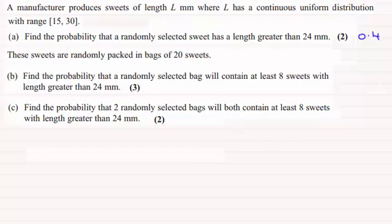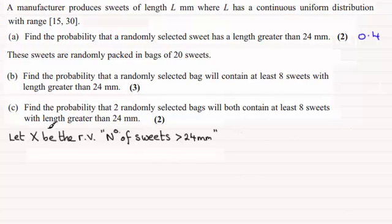Okay, welcome back then if you had a go at this one. So for part B then, I need to define a random variable. And I'm going to say let that random variable be X. And it's going to represent the number of sweets that have a length greater than 24 millimeters.